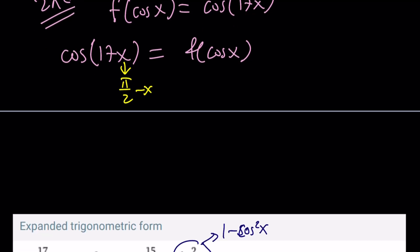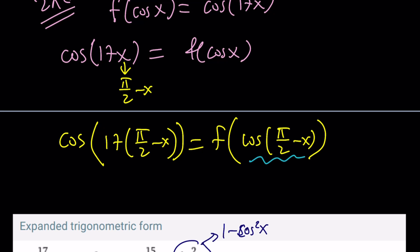So we're going to get something like this. cos(17(π/2 - x)) = f(cos(π/2 - x)). But what is cos(π/2 - x)? π/2 - x and x are complementary angles because they add up to π/2, which is 90 degrees. Therefore, cos(π/2 - x) is going to be sin x.